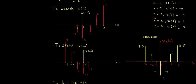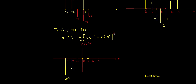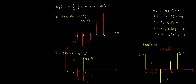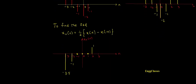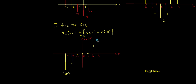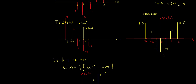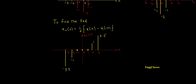At position 2, x(n) is 2 and x(-n) has nothing; 2 minus 0 divided by 2 gives 1. At position 3, x(n) is 7 and x(-n) has nothing; 7 minus 0 divided by 2 gives 3.5. This is the odd part of the signal — it is anti-symmetric about the vertical axis. Whatever values appear on the negative side become positive on the positive side of n.